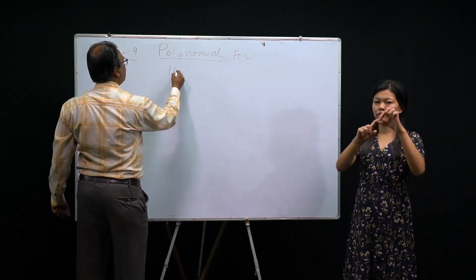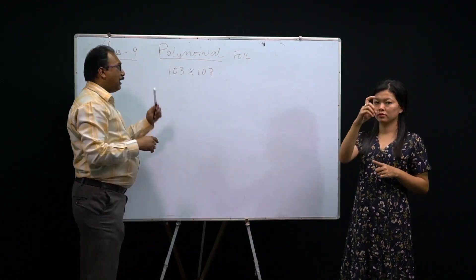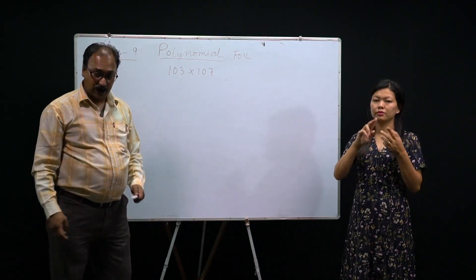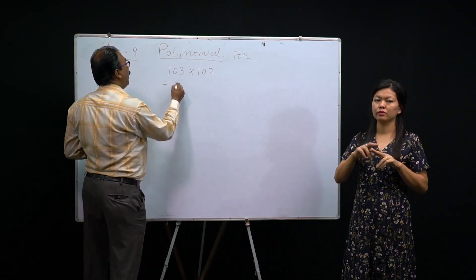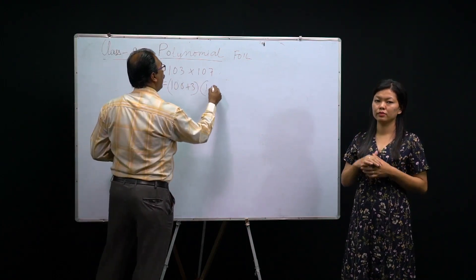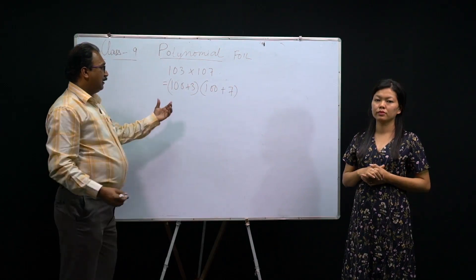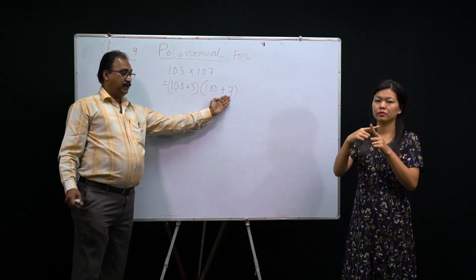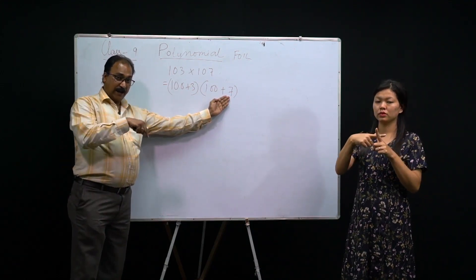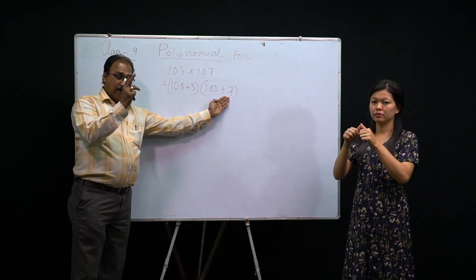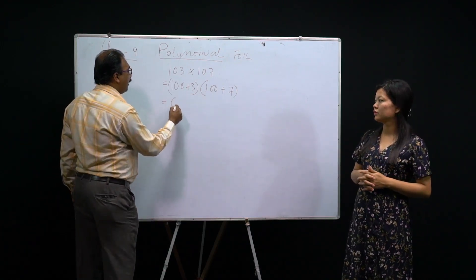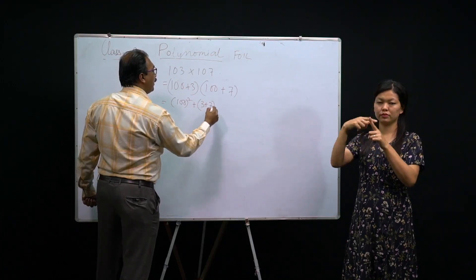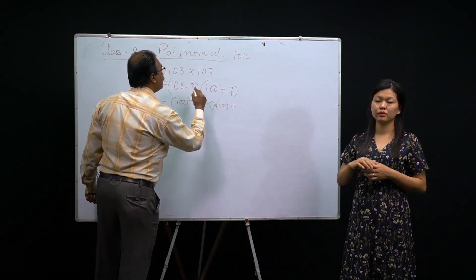Now look at one more question: 103 × 107. Without actual multiplication you have to find the product — using identities, meaning using a formula. Look at what we can write: 100 + 3 and 100 + 7. That is the same first number but different second numbers — so that is the formula (x+a)(x+b). What is the formula? x² + (a+b)x + ab. Here x = 100, so first term is 100².